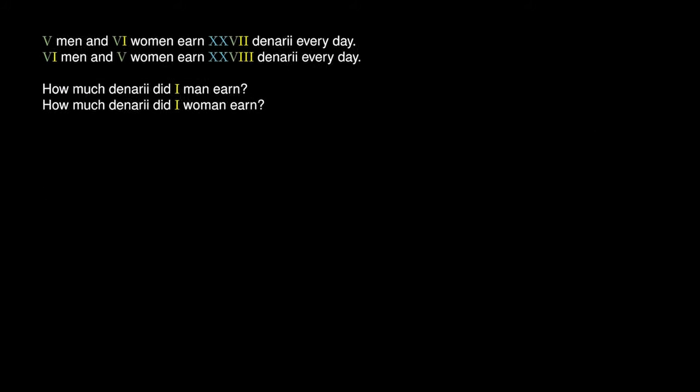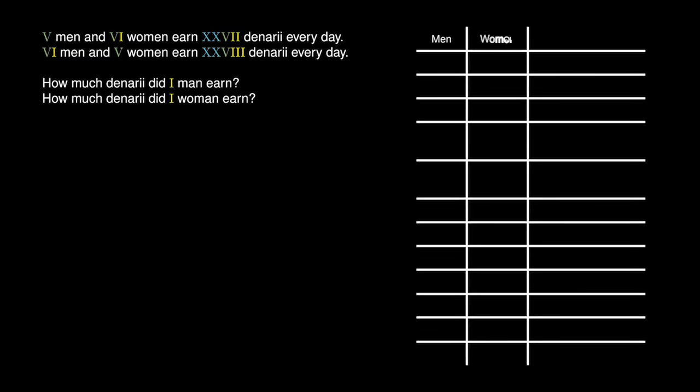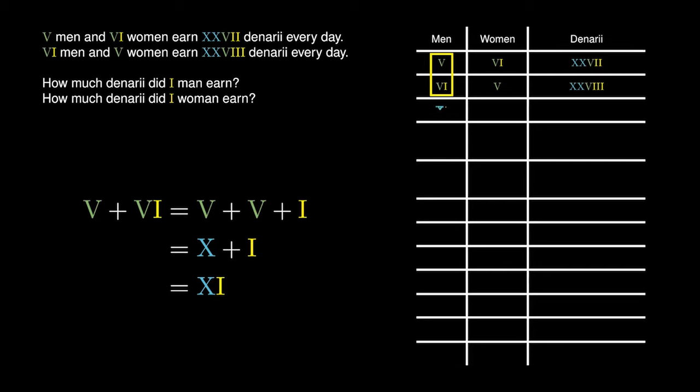We could slowly tabulate the earnings made by specific numbers of men and women. The first piece of information tells us that 5 men and 6 women earn 27 denarii, and the second piece tells us that 6 men and 5 women earn 28 denarii. We could try to add the number of men, women, and denarii. If we add 5 men to 6 men, we can split this up into 5 plus 5 plus 1, which equals 10 plus 1, giving us 11 men.